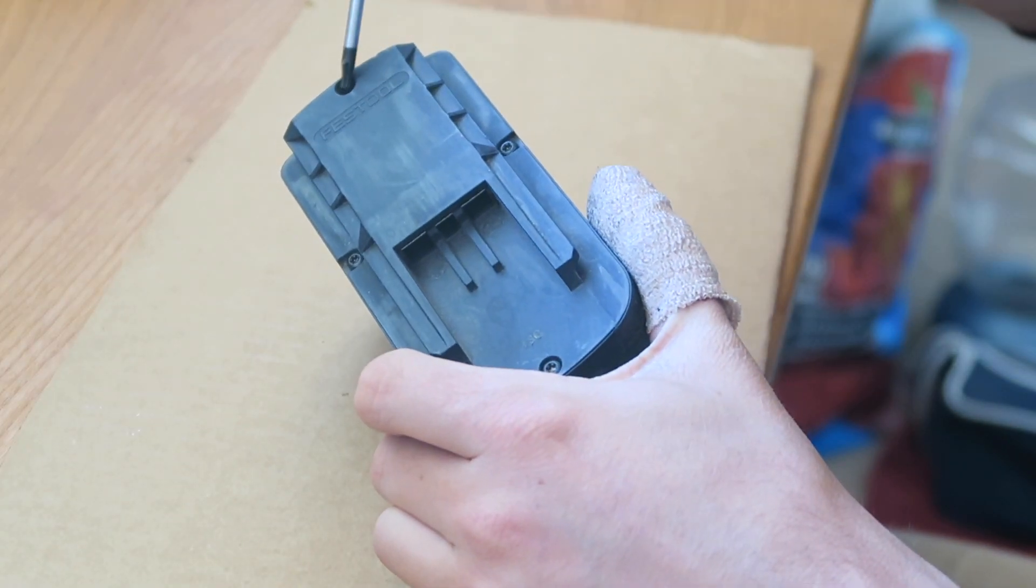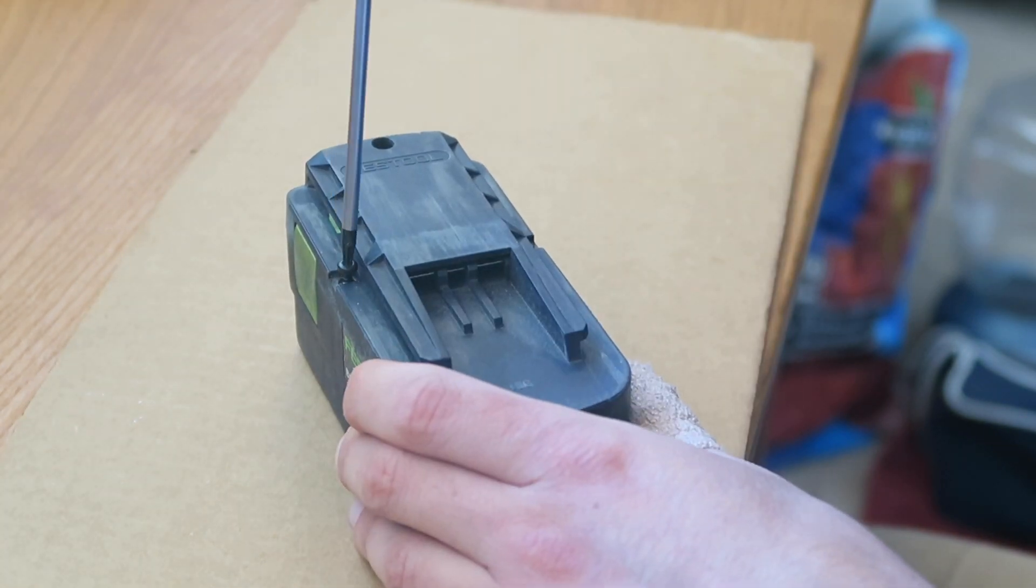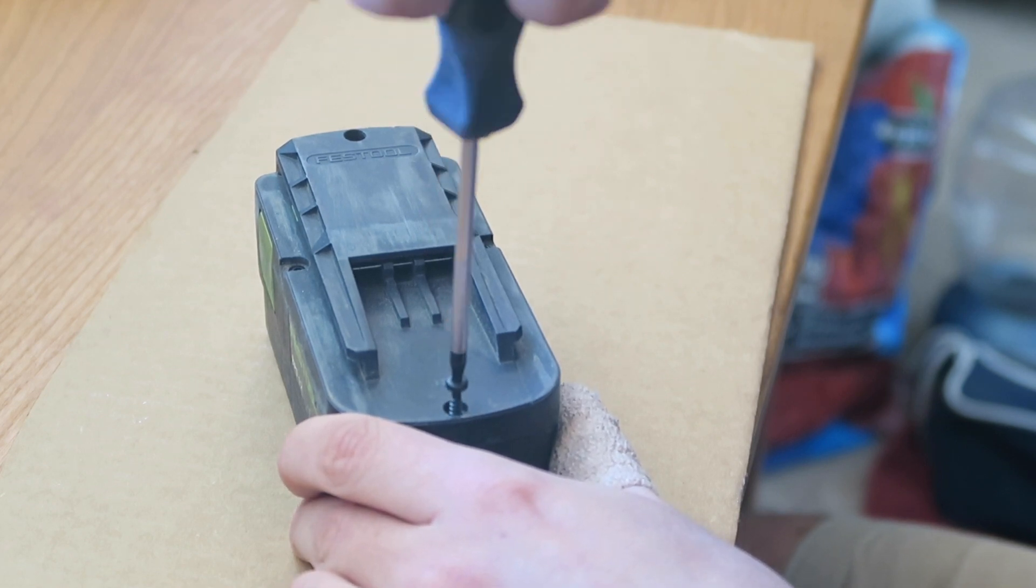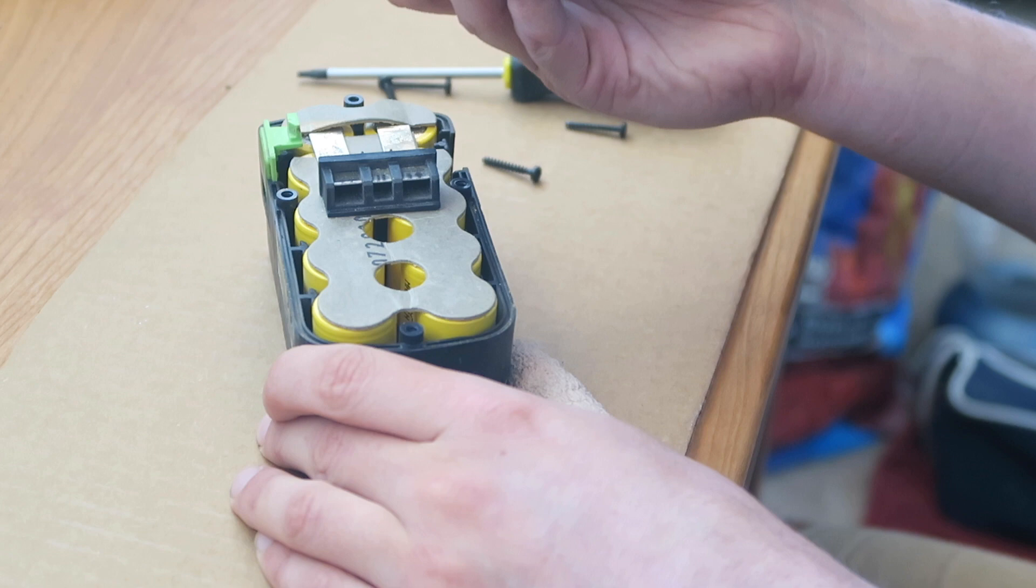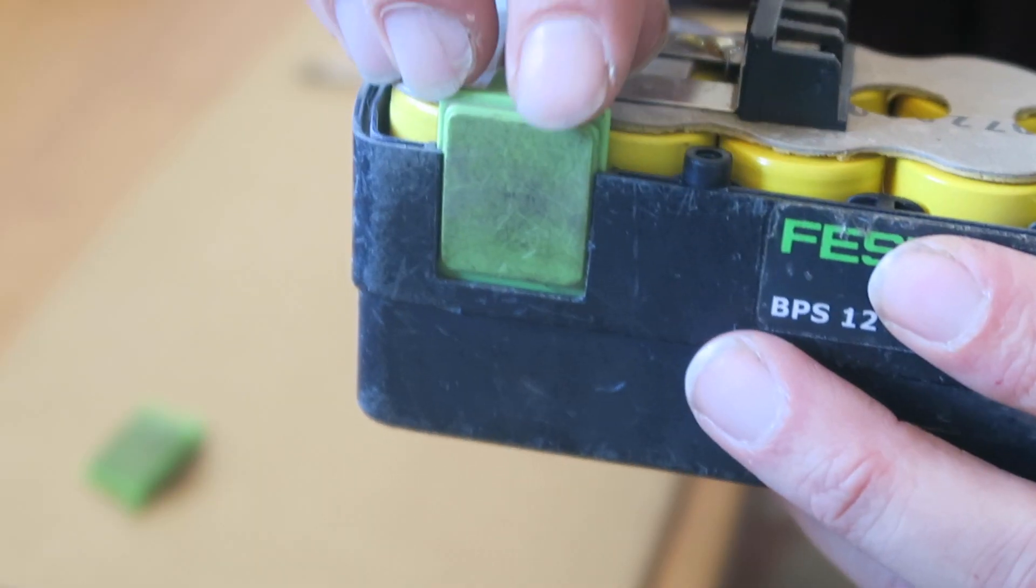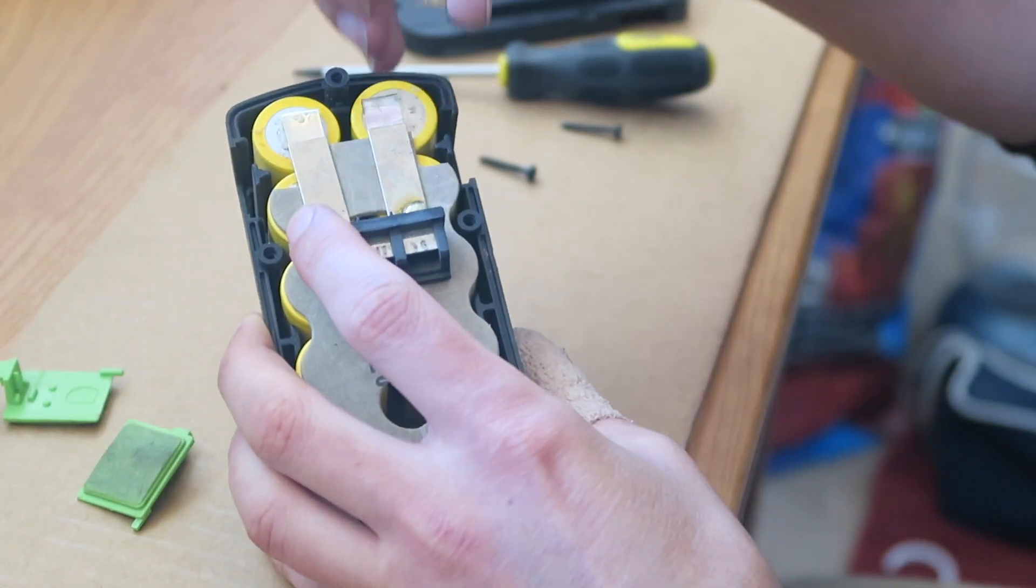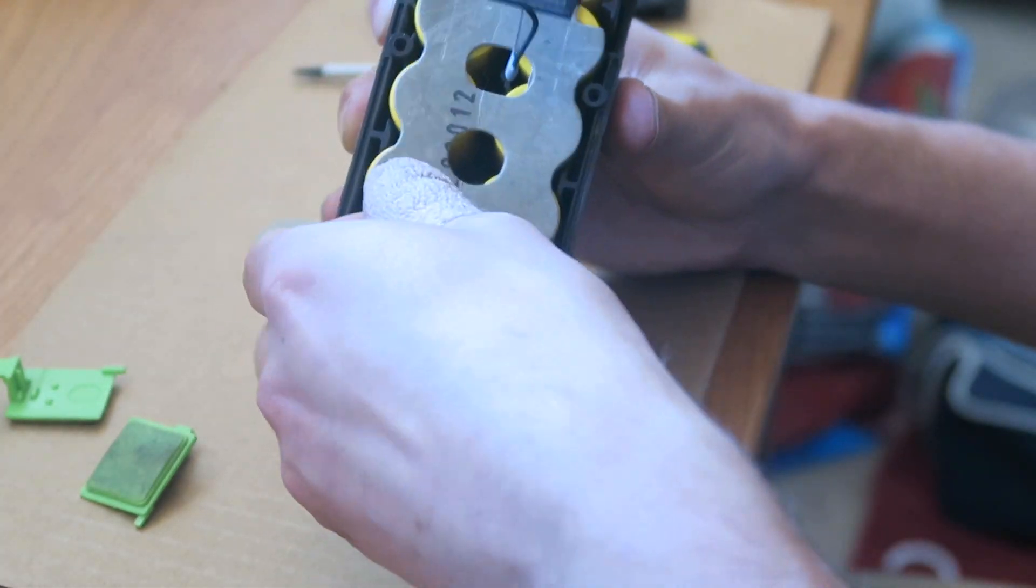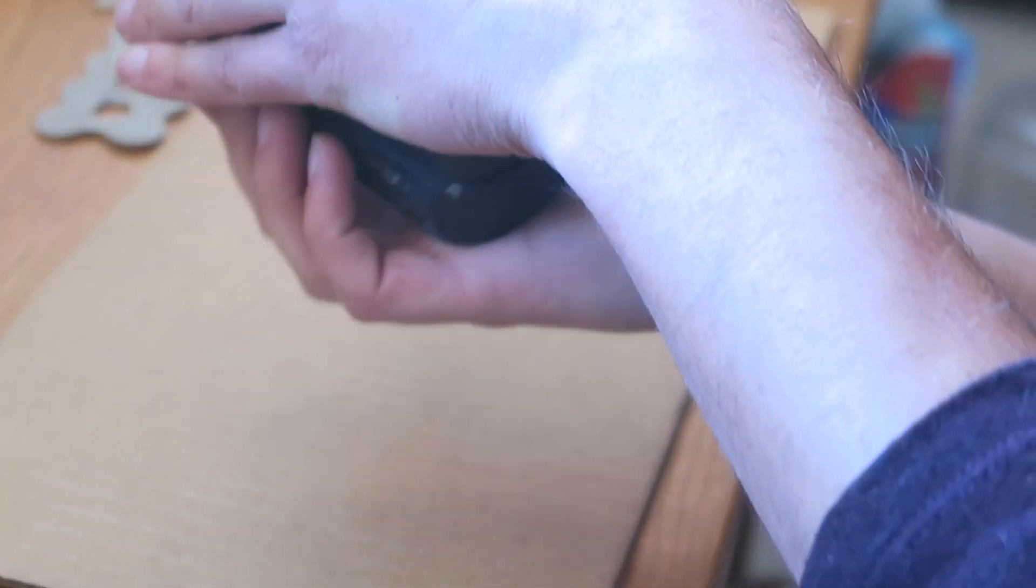Now, this particular battery uses Torx head screws. There's four of them, which you're going to unscrew. After unscrewing the screws, you're going to open up the top here, and that will reveal the batteries inside. There's two little tabs here, one on each side. Go ahead and pull those out. You'll then see some cardboard that's covering up the tops of the batteries. Go ahead and gently pry that off. You definitely don't want to break this because you're going to reuse it later on.